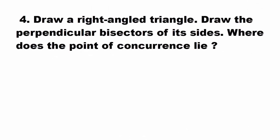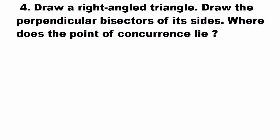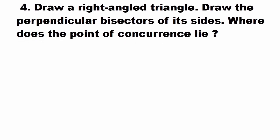Practice Set 1, Example No. 4. Draw right-angled triangle. Draw the perpendicular bisector of its side, where does the point of concurrence lie. Here, we have to draw first right-angled triangle, which is Katkun Trikun. Then, draw the perpendicular bisector of its side. So, let us draw the right-angle triangle.